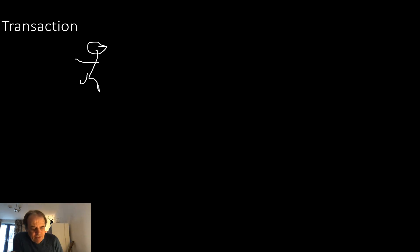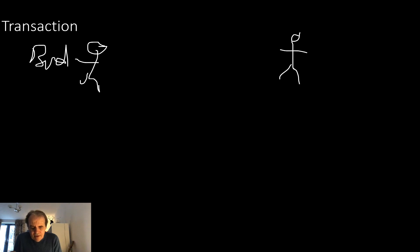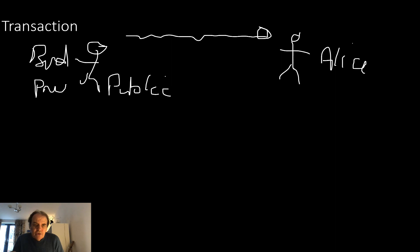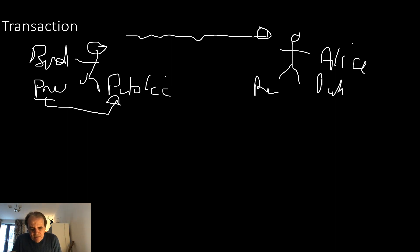Let's look at a basic transaction as we would see it with a cryptocurrency. We start with Bob, and over here we have Alice. Bob wants to send some cryptocurrency, so what we have is a private key and a public key. The private key is a completely random value, and that is used to derive the public key. Alice also has a private key and a public key.